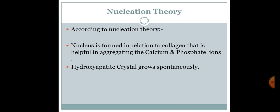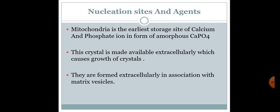Nucleation theory: According to nucleation theory, a nucleus is formed in relation to the collagen that is helpful in aggregating the calcium and phosphate ions, and hydroxyapatite crystals grow spontaneously. Nucleation sites and aging: mitochondria is an early storage site of calcium and phosphate in the form of amorphous calcium phosphate. This crystal is made visible extracellularly, which causes growth of the crystal, and they are formed extracellularly in association with matrix vesicles.